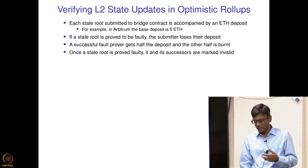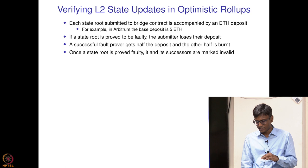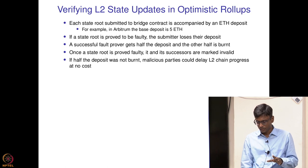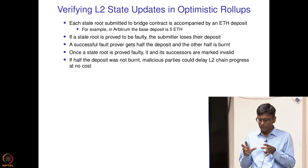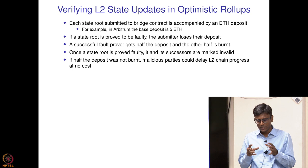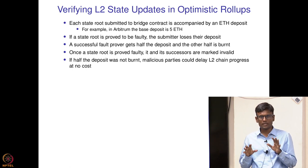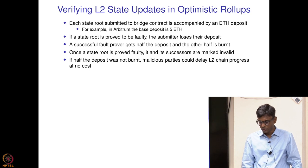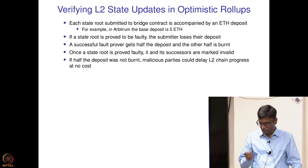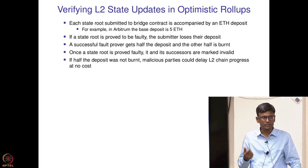Once the state root is proved faulty, its successors are also marked as invalid and rejected. If half the deposit is not burnt, some people may want to delay the L2 chain progress at no cost, because when a fault proof mechanism is being executed there is some delay and everybody is watching the chain to see the result. That is why we burn half the deposit to prevent malicious parties from submitting faulty state roots and then proving the fault themselves.